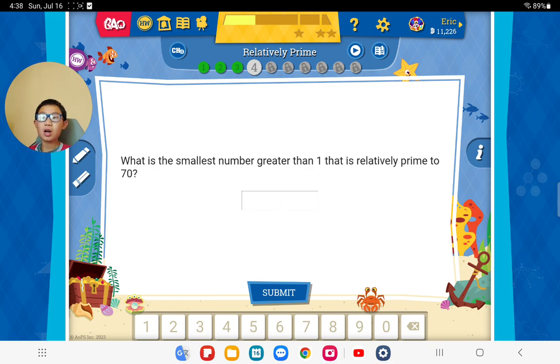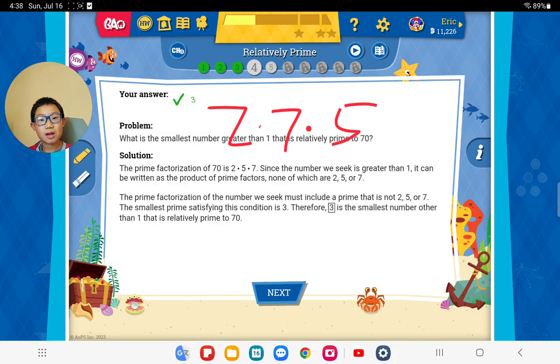What is the smallest number greater than 1 that is relatively prime to 70? We just need to find 70's prime factor so we know that 3 is the smallest number greater than 1. Yes. Yes. I think so. Good.